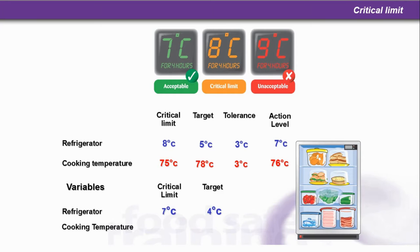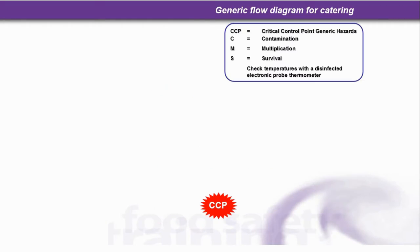As close as you can, it's 1 degree C without the produce actually freezing. For cooking temperatures, again we've got a critical limit of 76 and target level of 79 — so 1 degree higher. As far as UK cooking is concerned, very high temperatures can cause quality to dissipate. Always check temperatures with a disinfected electronic probe thermometer. The legend for the flow diagram: CCP means Critical Control Point; C, M and S mean Contamination, Multiplication and Survival.